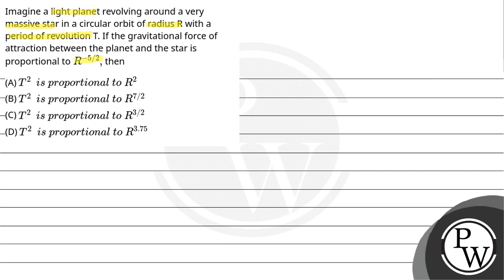then option A: T square is proportional to R square. Option B: T square is directly proportional to R raised to the power 7 by 2. Option C: T square is proportional to R raised to the power 3 by 2. Option D: T square is proportional to R raised to the power 3.75.